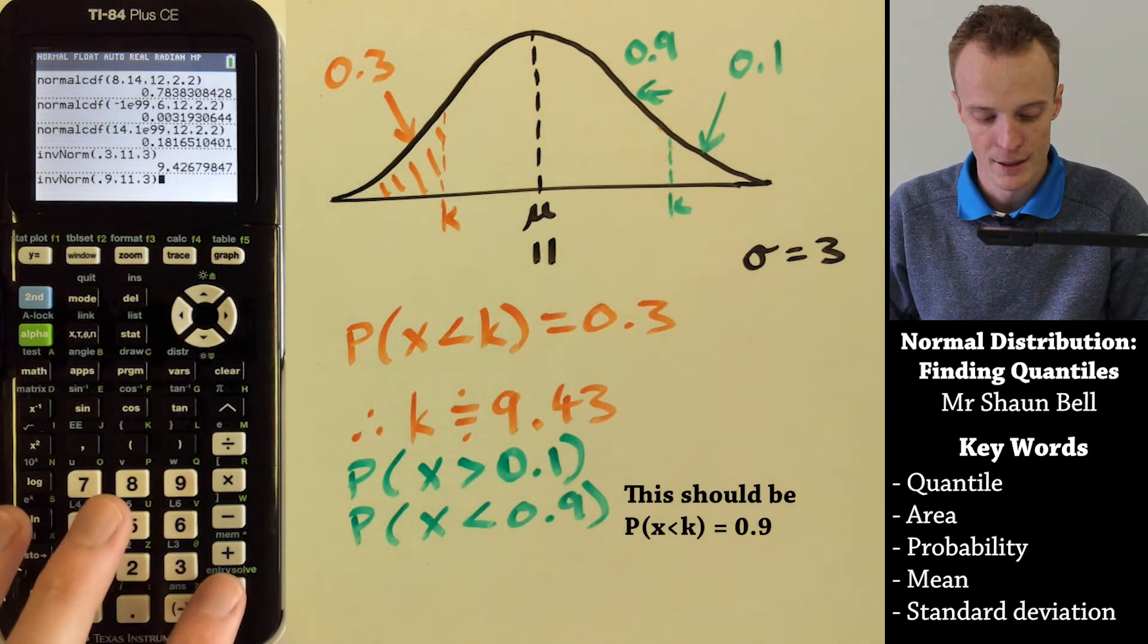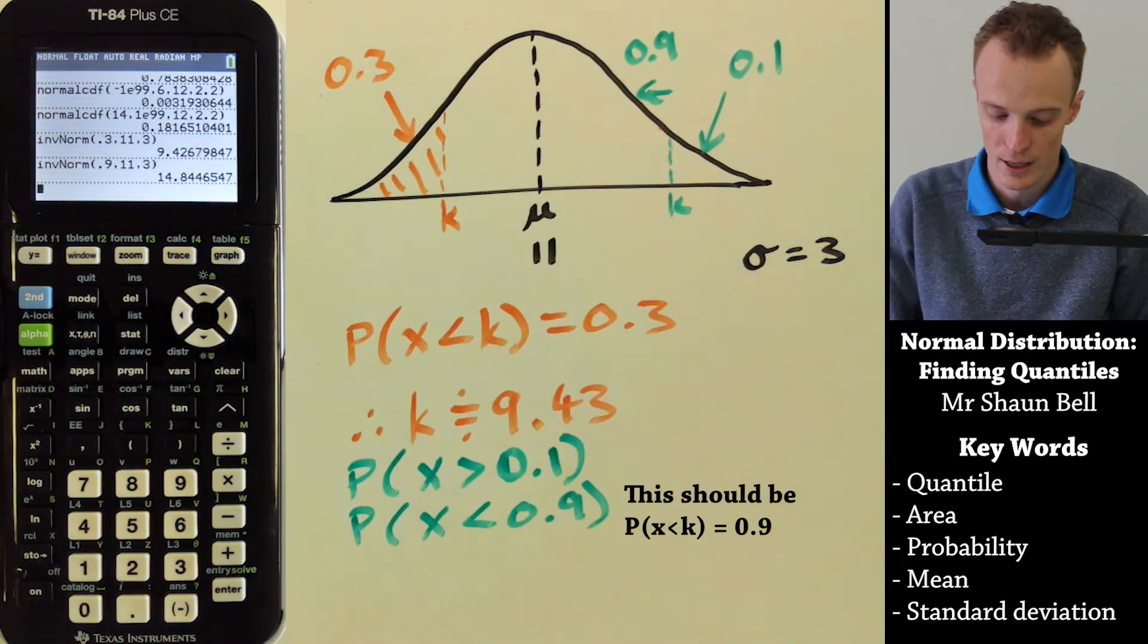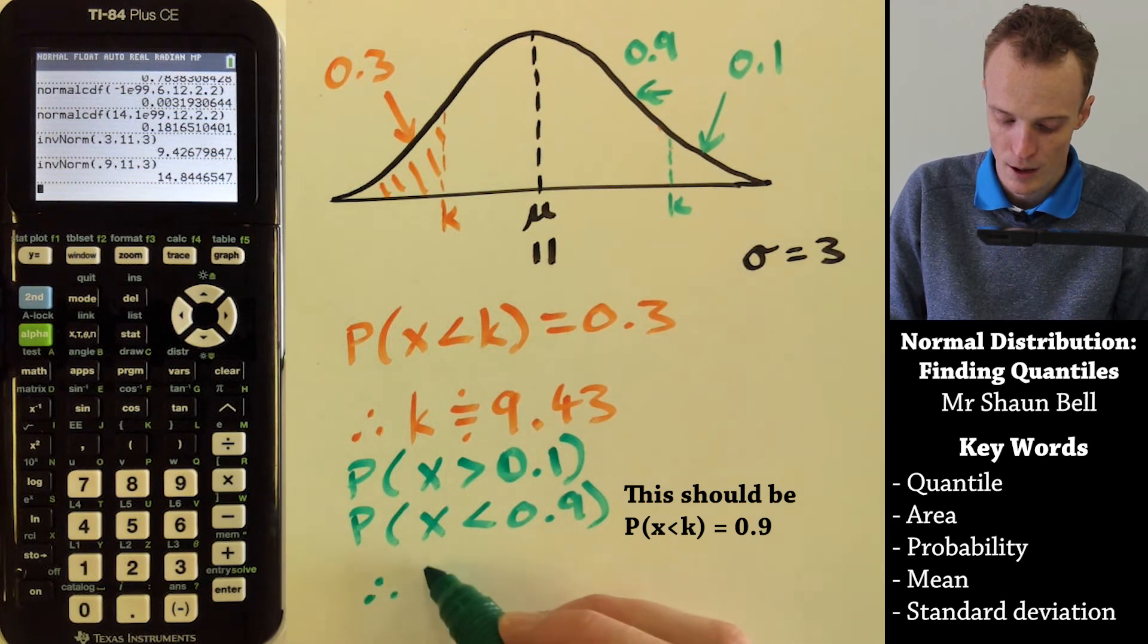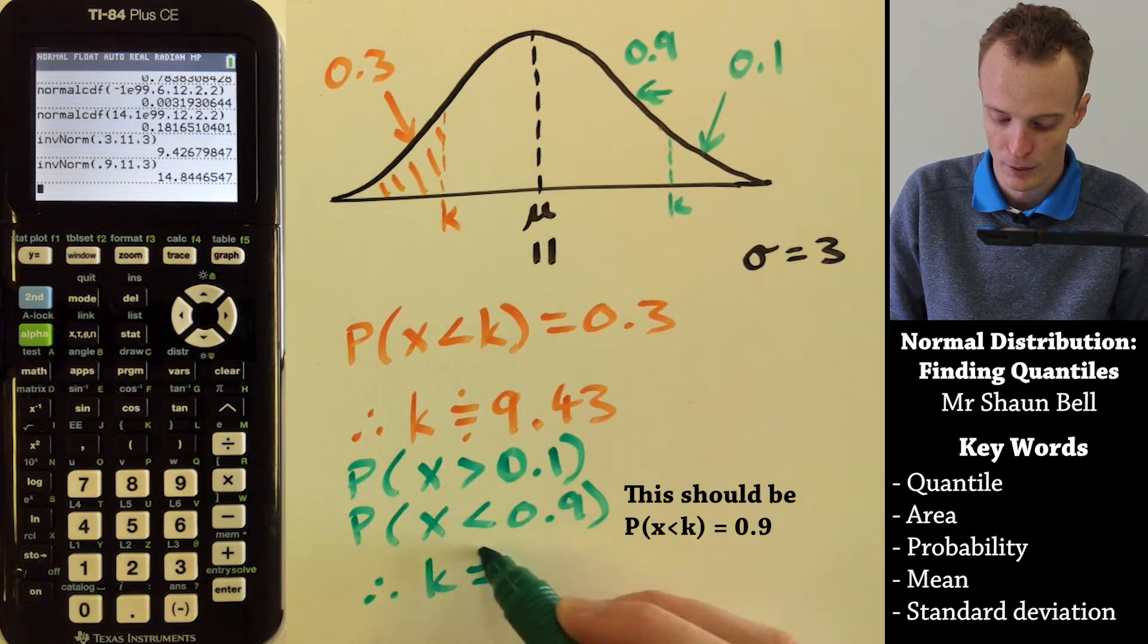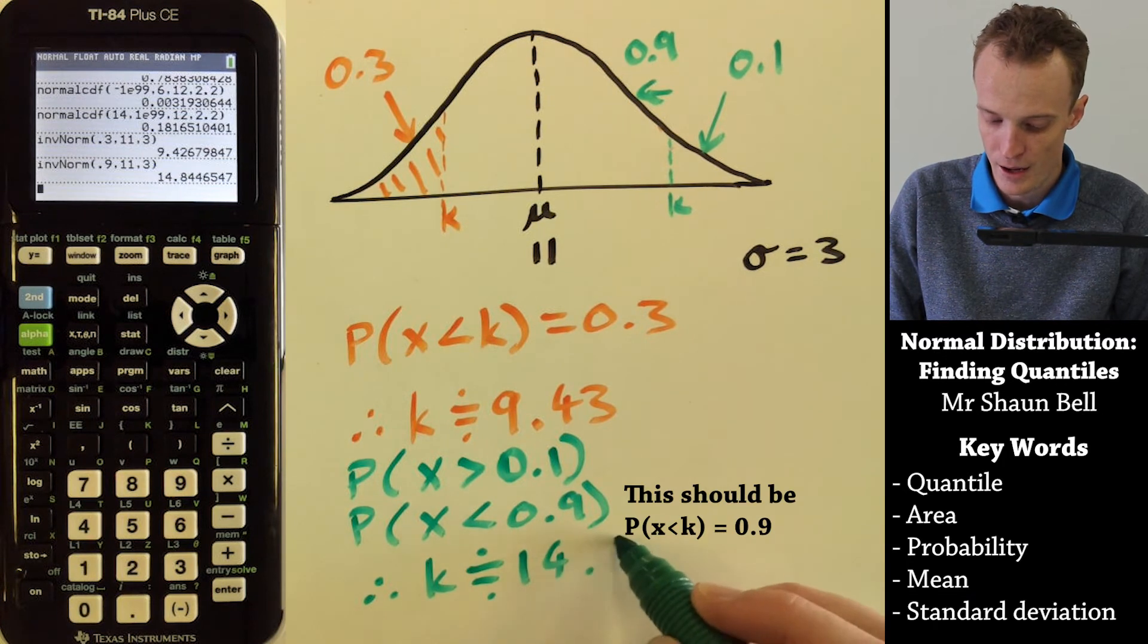When we paste that in, it will give us our K value. Therefore, our K value is approximately equal to 14.84.